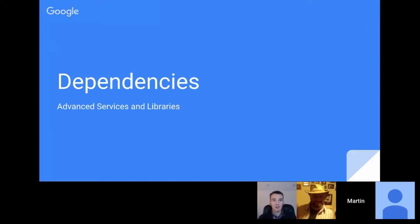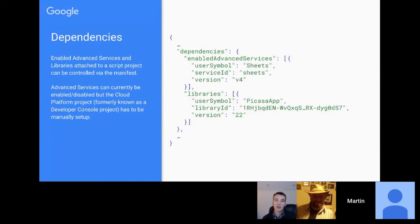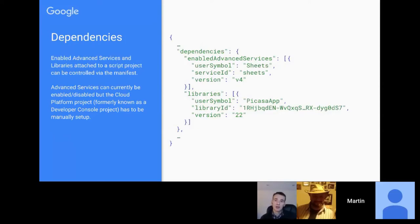Under dependencies, the manifest includes advanced services and libraries. In this example you can see the structure: at the top there's an enabled advanced service for Sheets with a user symbol, service ID, and version. There's also a library entry for PicasaApp. When you add advanced services and libraries through the UI, the manifest file is automatically updated — you don't need to worry about editing it manually.